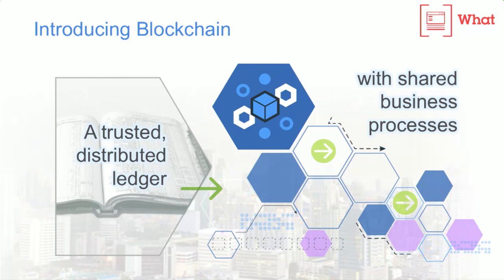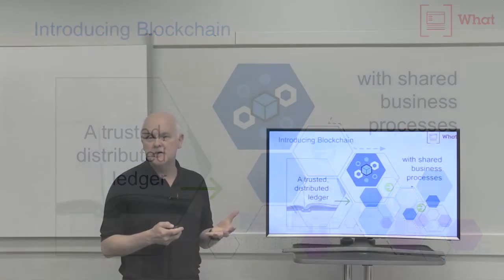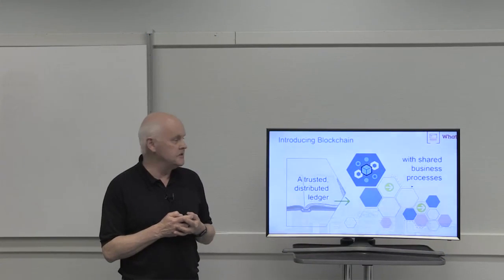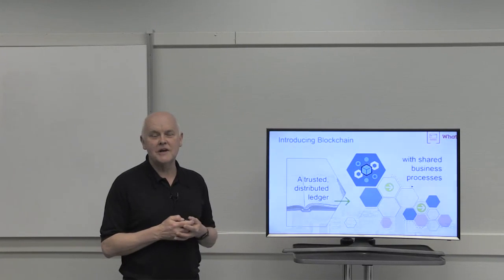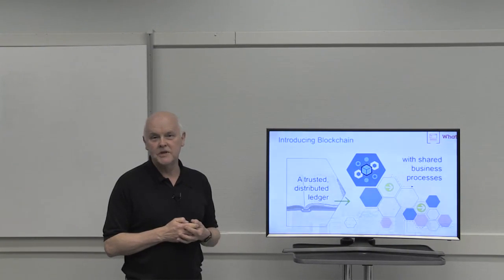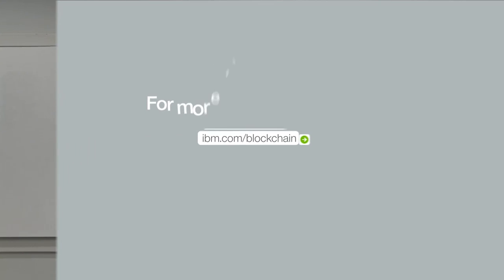Now, we haven't talked about blockchain very much up to now. Let's actually bring blockchain into the picture. Blockchain, at the very highest level, is a trusted distributed ledger, which has a shared set of business processes across all the members of the business network. That's it. If someone asks you in the elevator what is blockchain, this is what we should effectively be telling them.